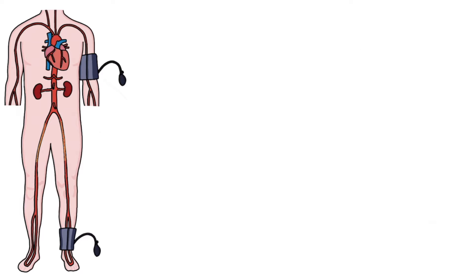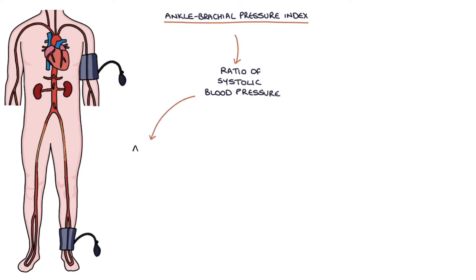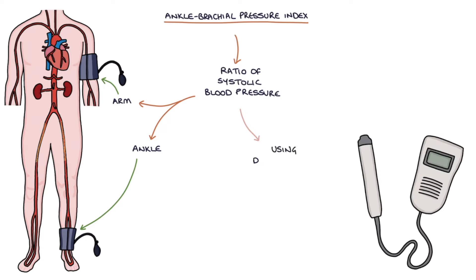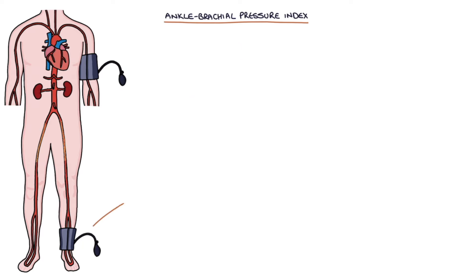Let's talk in more detail about the ankle brachial pressure index, or ABPI. The ABPI is the ratio of the systolic blood pressure in the ankle around the lower calf compared with the systolic blood pressure in the arm. These readings are taken manually using a Doppler probe. For example, an ankle systolic blood pressure of 80 and an arm systolic blood pressure of 100 gives a ratio of 0.8, which is 80 divided by 100.